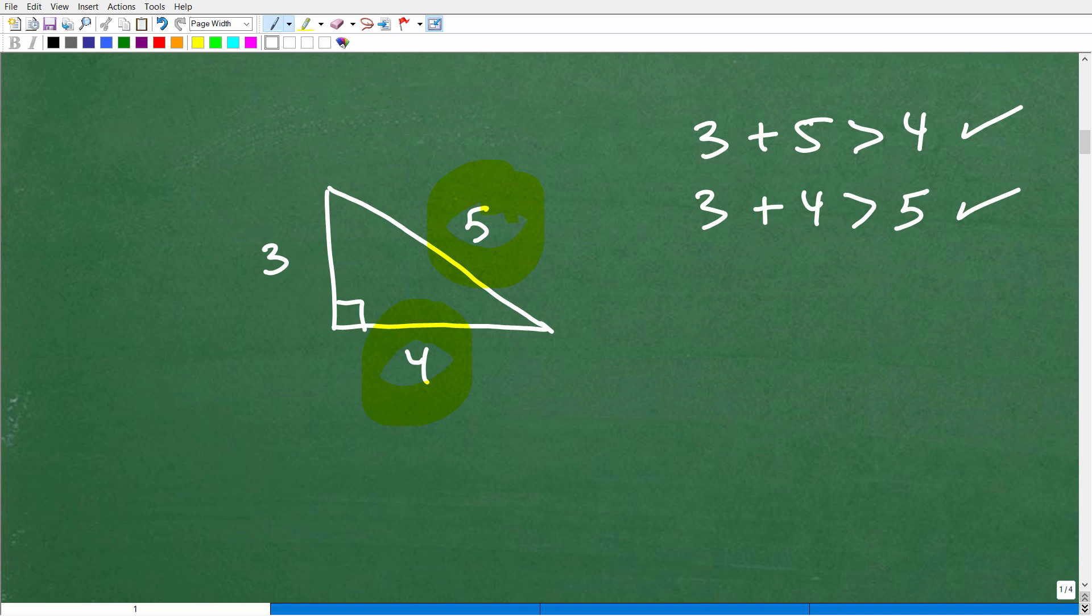And so now we just have to check these last two sides. 5 and 4 is 5 plus 4. Is that greater than 3? And it is. 9 is greater than 3. So that works out. So this is an illustration of the triangle inequality. This is how you check to determine, in fact, given three sides, you can form an actual triangle.